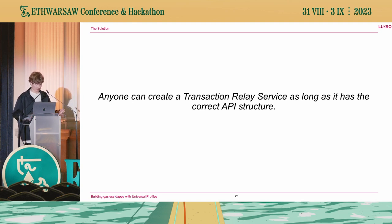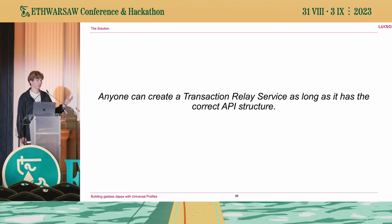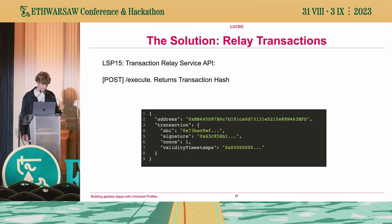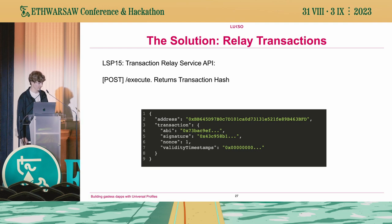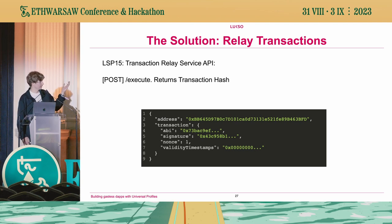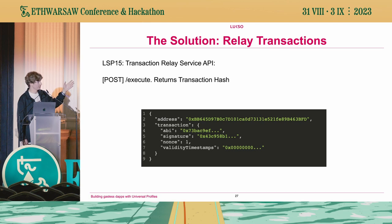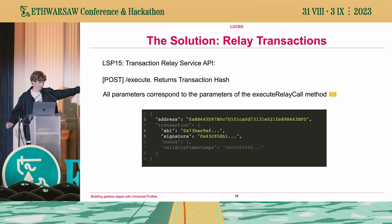To make relay services compatible with the browser extension, they need to follow a common interface — the browser extension needs to know the correct format of the message sent to the third-party relay service. We've developed another standard called LSP15, the Transaction Relay Service API. It's a simple interface: a POST request to a root slash execute endpoint that returns the transaction hash. In the body, we send the Universal Profile address and the transaction parameters — four parameters that exactly correspond to what is passed inside execute relay call.